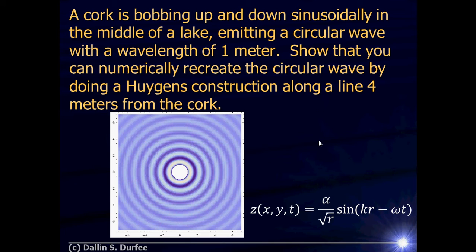Now let's go down into two dimensions. In a two-dimensional circular wave, the power is spread out over bigger and bigger circles. The circumference of a circle is proportional to the radius, so the two-dimensional intensity should go down as one over R. The amplitude goes down as the square root of that — one over the square root of R. When R equals zero this goes to infinity, so you can't really talk about the wave right at the center.